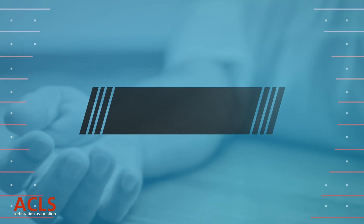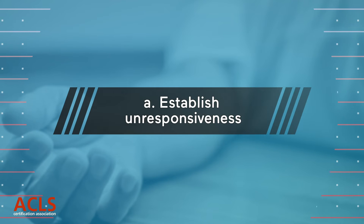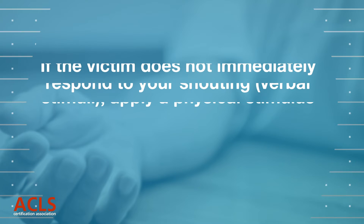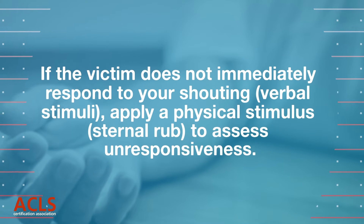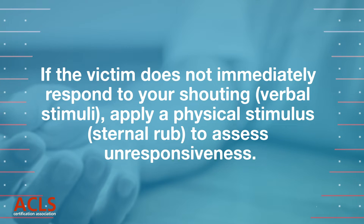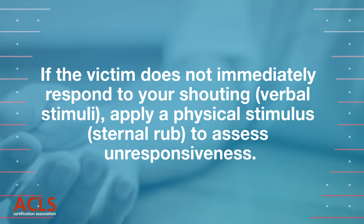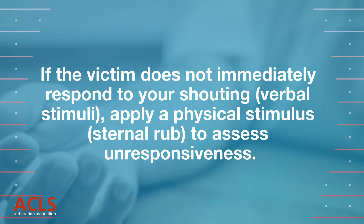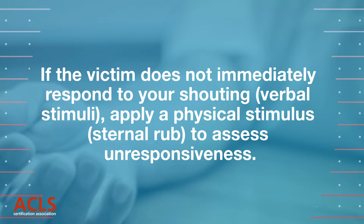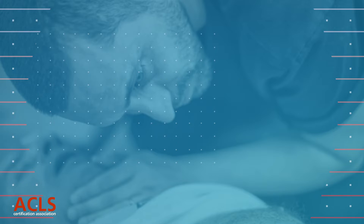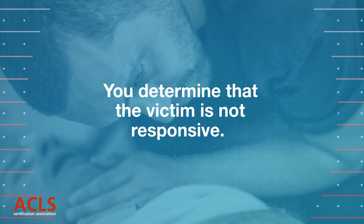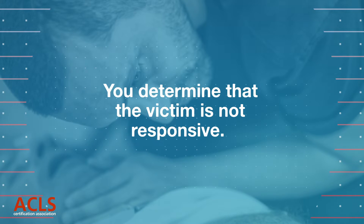Question 3: the next step you should take is to — A) establish unresponsiveness, B) check for a pulse and breathing, C) begin CPR, D) begin rescue breathing. Correct answer: A, establish unresponsiveness. If the victim does not immediately respond to your shouting (verbal stimuli), apply a physical stimulus such as a sternal rub to assess unresponsiveness. You determine that the victim is not responsive.